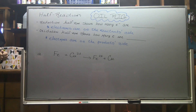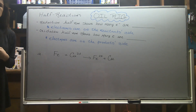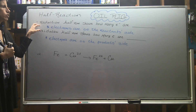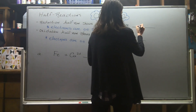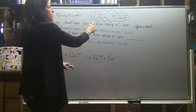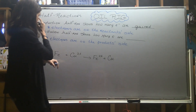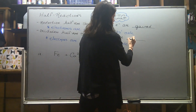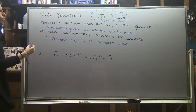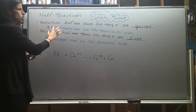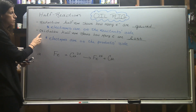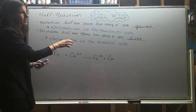We need to talk about half reactions. Half reactions are a way of breaking down and understanding redox reactions. One half reaction — the reduction half reaction — shows how many electrons are gained. Remember: reduction is gain (RIG), and the OIL part means oxidation is loss. Our oxidation half reaction shows how many electrons are lost. If you're dealing with a reduction half reaction, you should see electrons written on the reactant side; for an oxidation half reaction, electrons are on the product side.